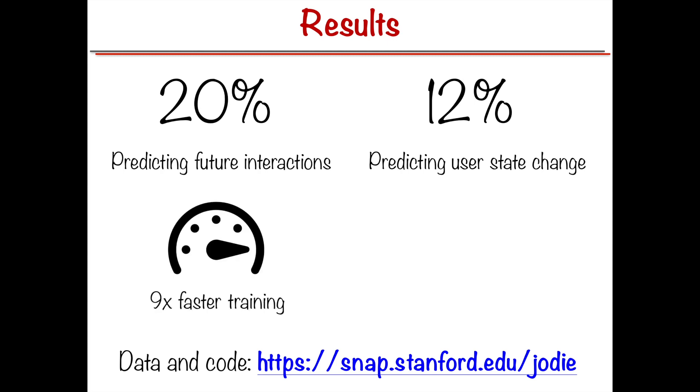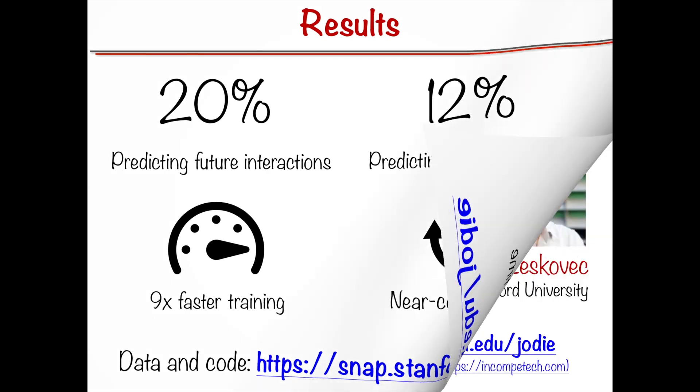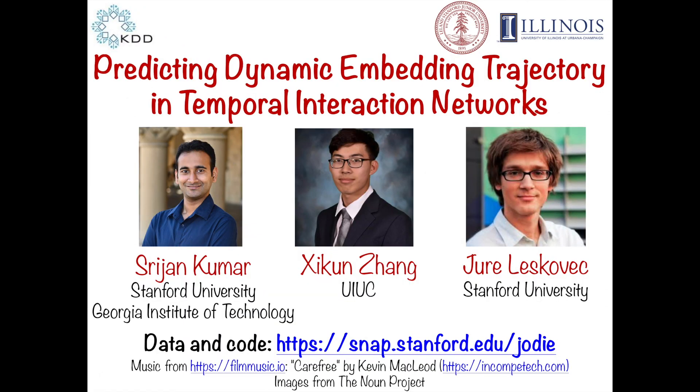JODI does all this while being nine times faster in training than existing algorithms and it creates near constant time recommendations. The code for JODI algorithm is available on the project website. For details, please refer to the paper. Thank you for listening and we hope to see you at the conference.